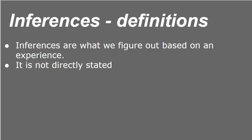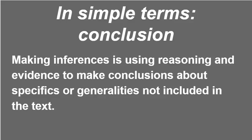Pause the video now and write down the definition. In simple terms, we're going to come to a conclusion. We have looked and figured out which text structure the author used, decided why they used it, and what they wanted from us — we inferred that. Now we're going to make a conclusion using our reasoning and evidence to make conclusions about specifics or generalities that were not included in the text.